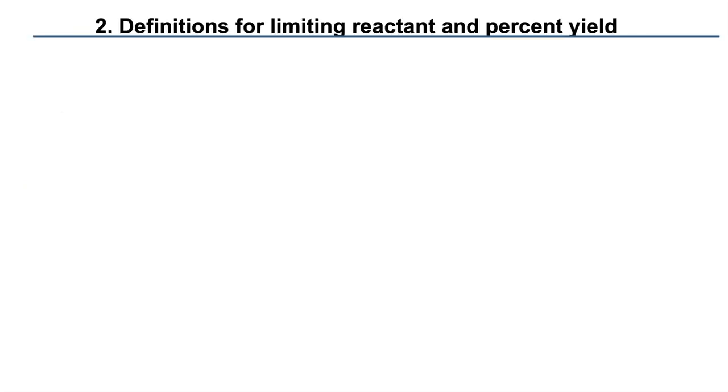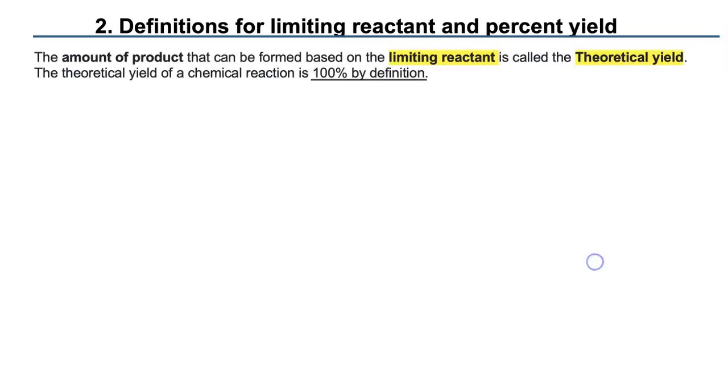So here's our first problem. Sorry, not problem, definitions. Write these down, and this is how you know which one is which. Limiting reactant versus percent yield. The amount of product that can be formed based on the limiting reactant is called the theoretical yield. This is 100% of the product when it's made.